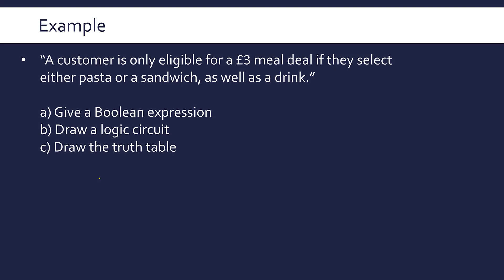Let's look at an example of how this might be applied in a real-life context. Following the scenario, we need to give the Boolean expression, draw a circuit, and draw the truth table. The scenario is: a customer is only eligible for a £3 meal deal if they select either pasta or a sandwich, as well as a drink.